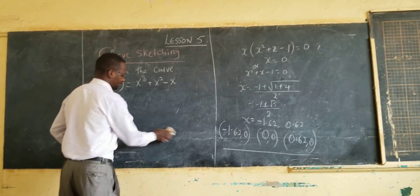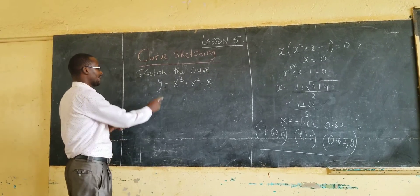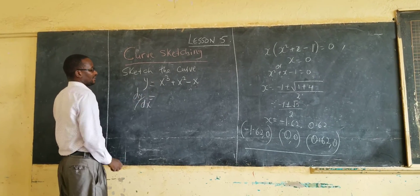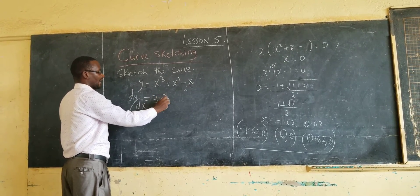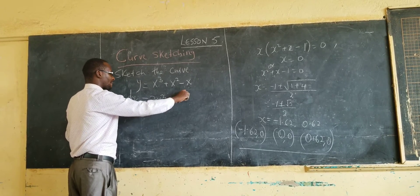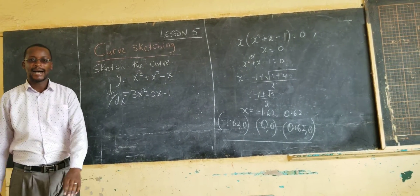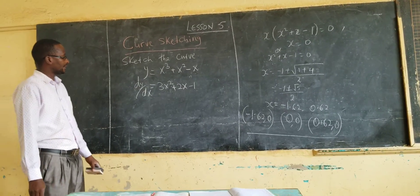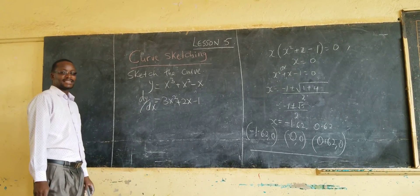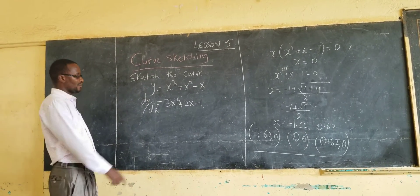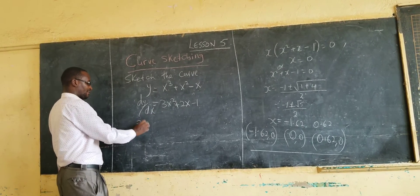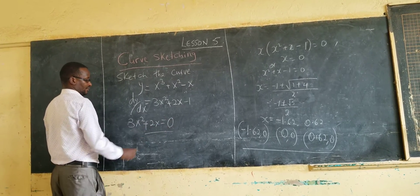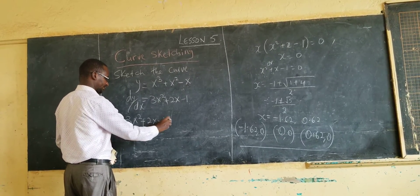After getting the intercepts, we differentiate the curve to find the stationary points. dy/dx = 3x² + 2x − 1. At the stationary points, dy/dx = 0, so 3x² + 2x − 1 = 0.